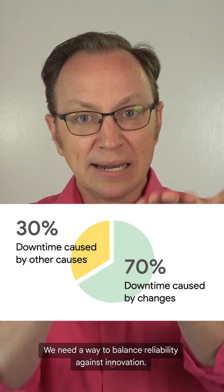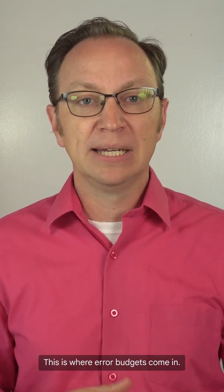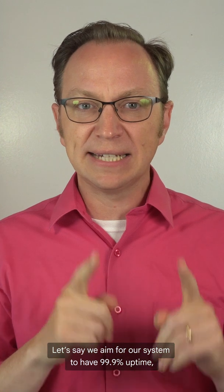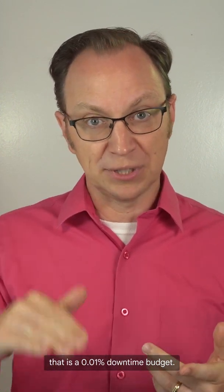We need a way to balance reliability against innovation. This is where error budgets come in. Let's say we aim for our system to have 99.9% uptime, that is a 0.01% downtime budget.